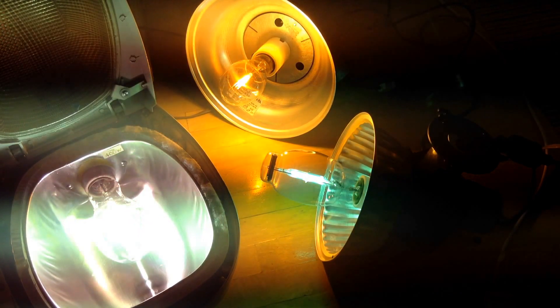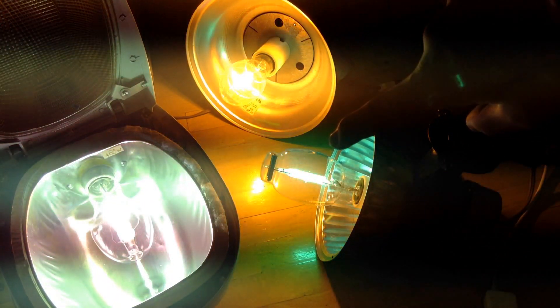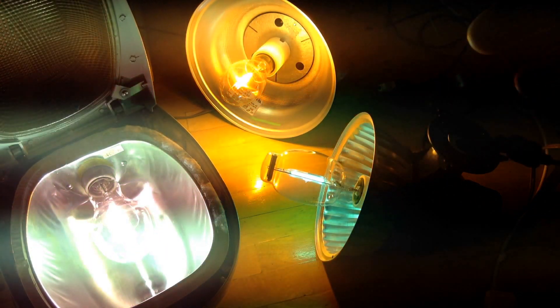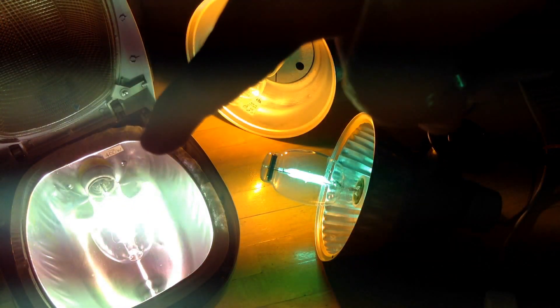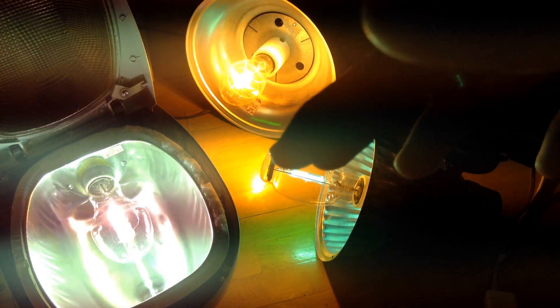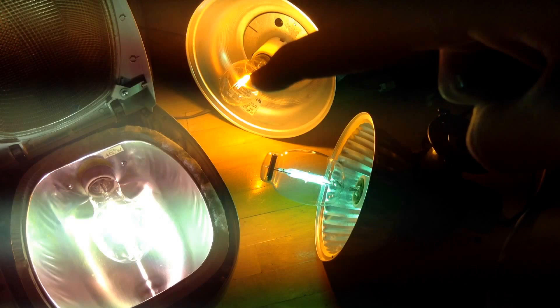Here you have it. As you can see, the dimmest one is the mercury vapor right here. Obviously, the brightest one is the metal halide because it's a higher wattage, but the high-pressure sodium is 100W and this one is 175W.